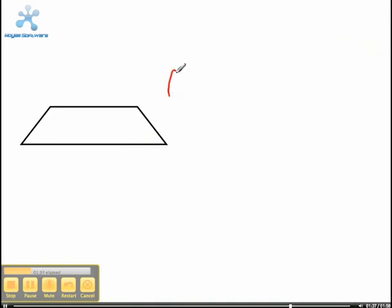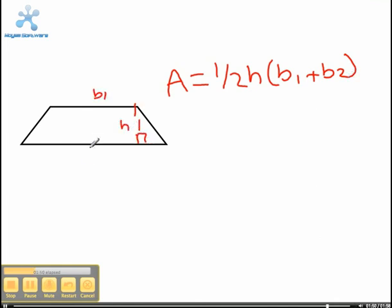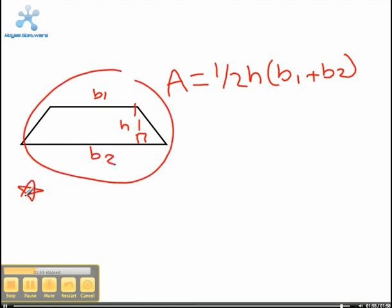In closure, the formula for the area of a trapezoid is A equals 1/2 times height times base 1 plus base 2, where the bases are always the parallel sides and the height is always the side with the right angle. You will need to know this for your check for understanding. And if you do not believe me, just wait.